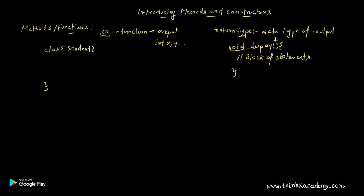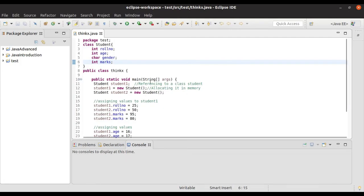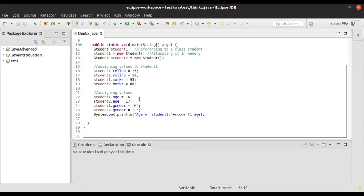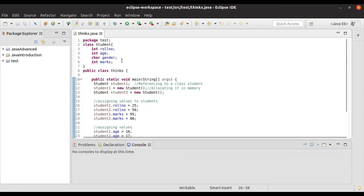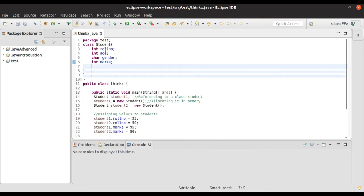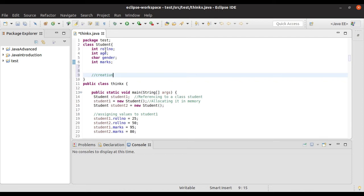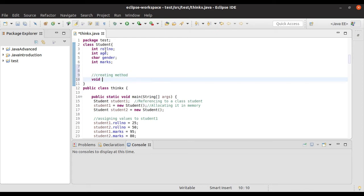Let's go to the Eclipse IDE and implement the function void display. In Eclipse we will create the function void display and use the object of the class Student to display the details of a particular student by calling this function. This is the program we wrote previously. Now I'm going to create a function in the Student class.